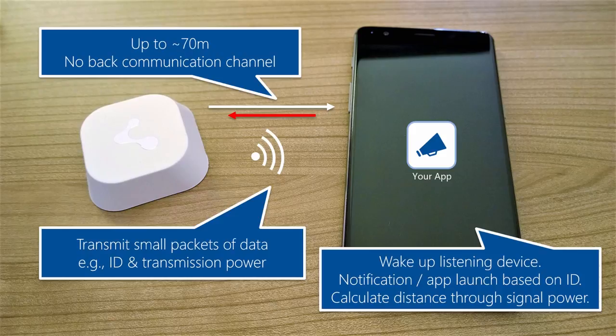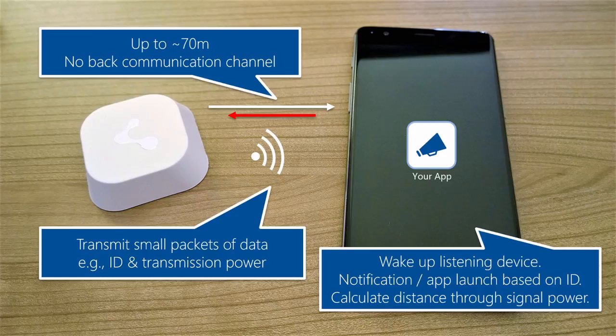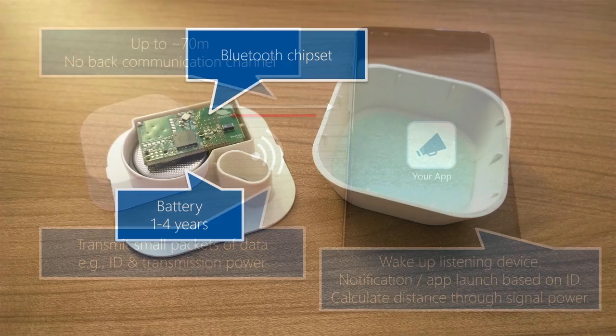Another important application area for Bluetooth beacons is indoor navigation. Beacons have a limited range, so you know if you see a beacon that you're really close to that area. If you have multiple beacons and can triangulate positions — knowing where each beacon is and how strong the received signal is — you can determine where you are even inside a building or in a cellar where other signals don't penetrate well.